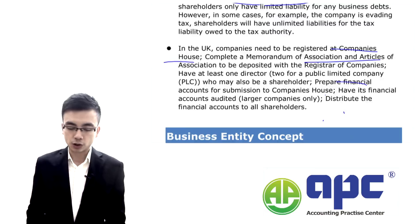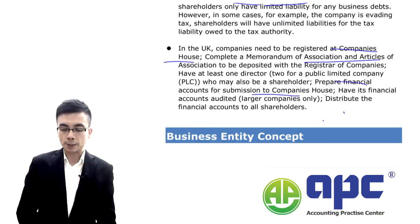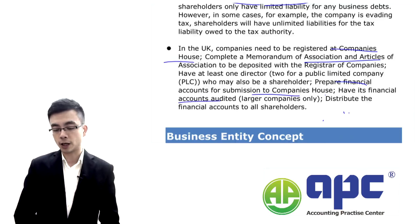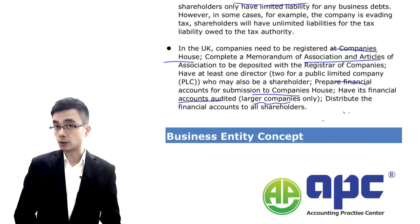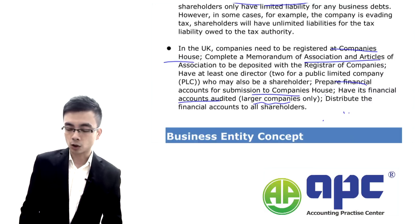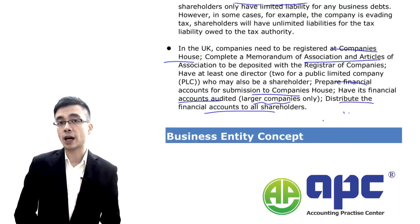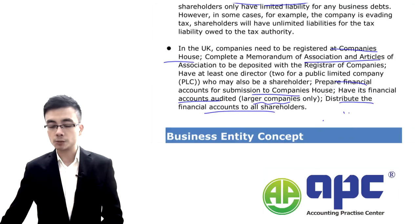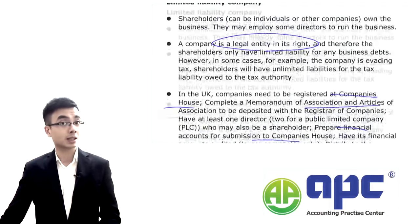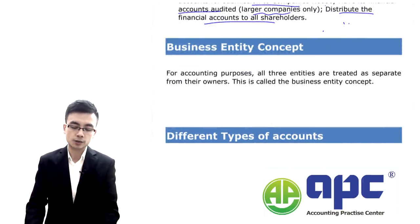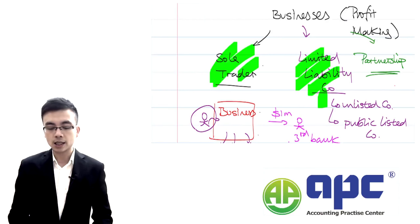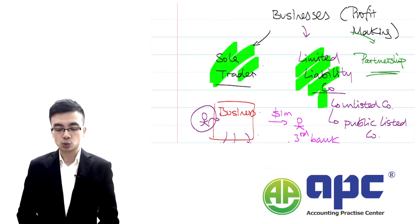You need to prepare and submit financial accounts to Companies House in the UK, and also have your financial statements checked by an audit firm — but only for larger companies, especially publicly listed ones. You also need to distribute your financial statements to all shareholders to tell them how much profit you've earned and how much cash will be distributed to them. So there are many more procedures in place if you want to set up a limited liability company. Just to recap: there are three types of businesses — sole trader, limited liability company, and partnership.